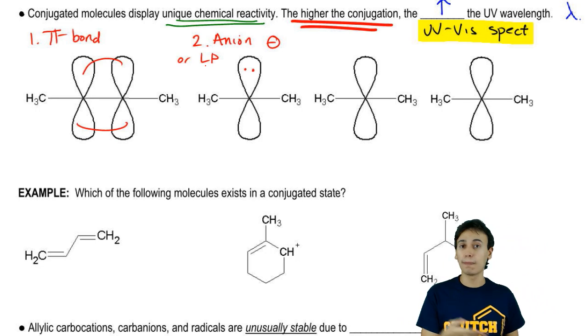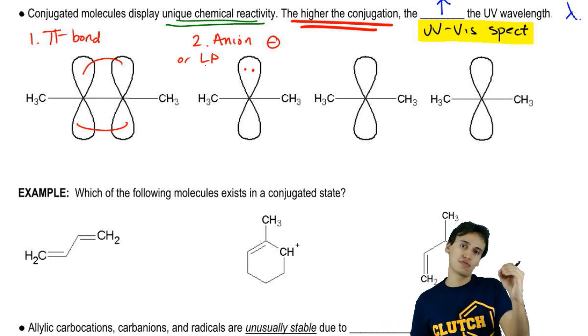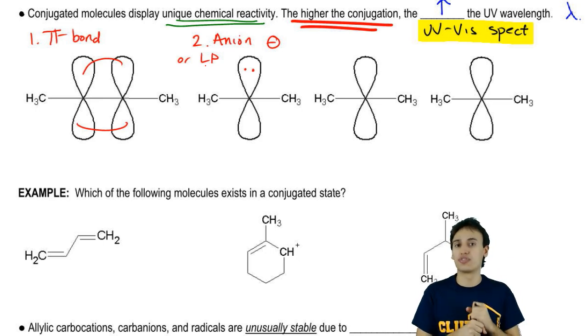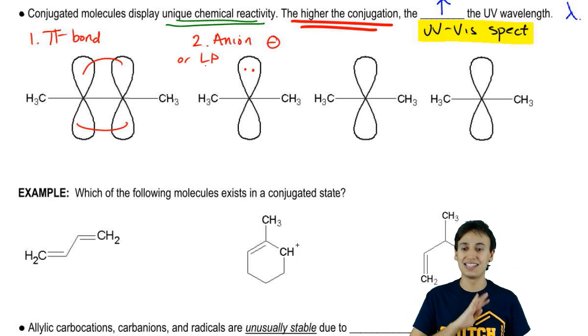In terms of resonating, the idea of having a lone pair or a negatively charged anion, really they resonate the same exact way. The whole deal of having a negative charge just has to do with what's the formal charge of that specific atom. For the context of conjugation, we're going to treat these exactly the same.